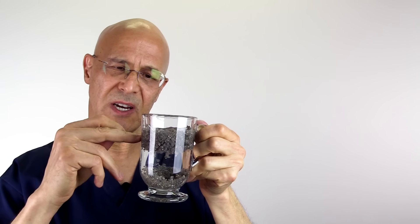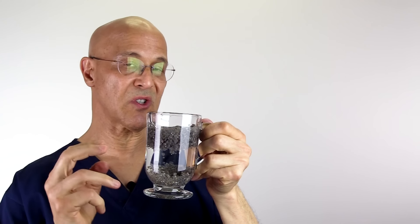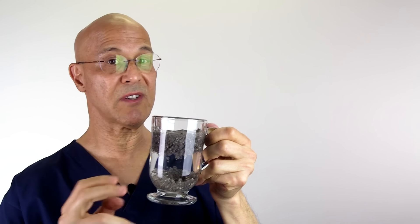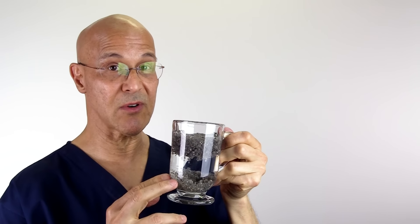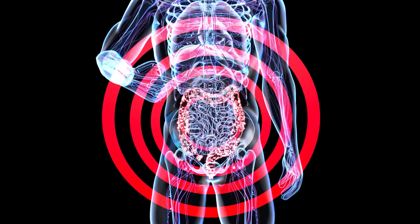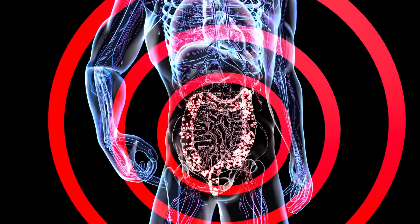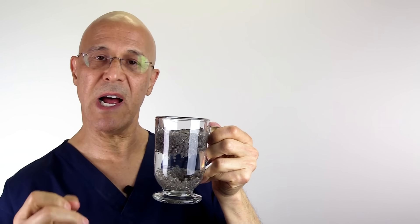As this chia seed mixture is going down into your intestines, it's not going to assimilate in the small intestine because we don't have the enzymes to digest soluble fiber. So it makes its way into the colon. And that's where your probiotics are. That's your microbiome.